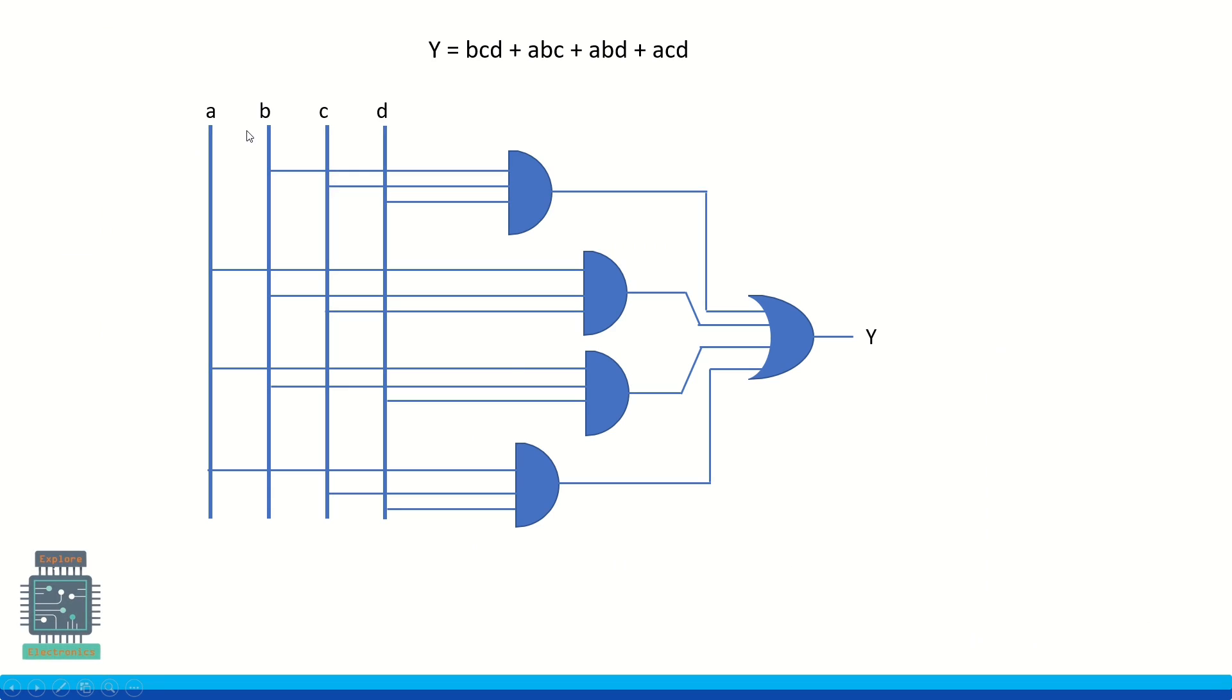So for that, if you take a, b, c, d vertically, b c d can be connected as b, c, and d inputs to one AND gate. It gives b c d here. Similarly a b c: take a, b, and c to one more AND gate. It gives a b c. And a b and d gives a b d output. And the last AND gate is a c d output.